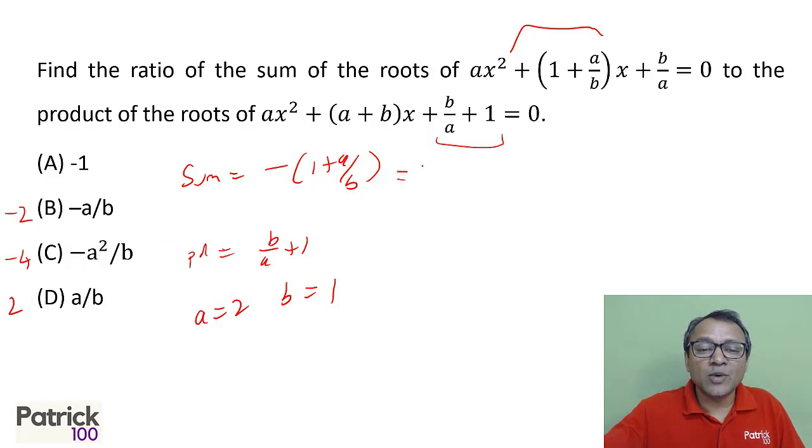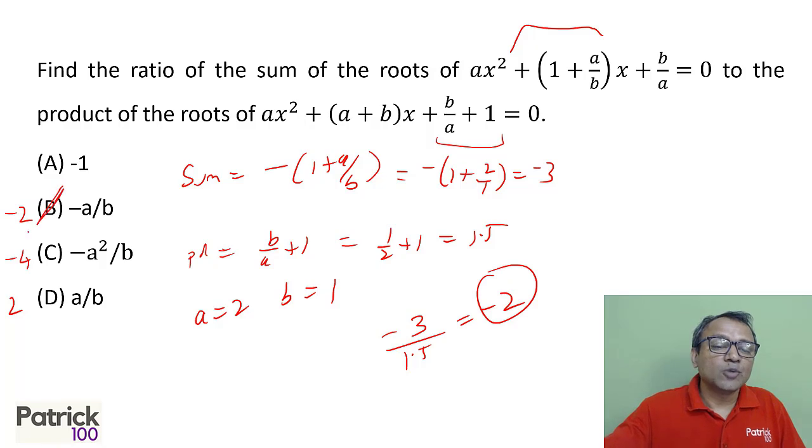Substitute. The sum of the roots, we put a as 2 and b as 1 is minus 1 plus 2 upon 1 which is minus 3. And product of the roots is 1 upon 2 plus 1 which is 1.5. So the division sum upon product is minus 3 upon 1.5 which is minus 2. Only option minus 2 is B option. That is the answer.